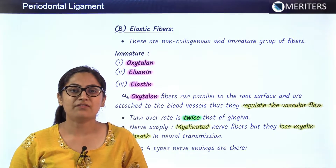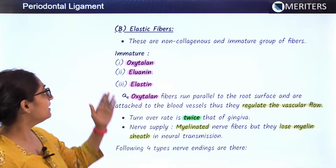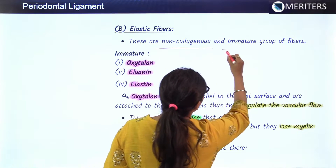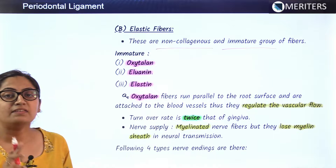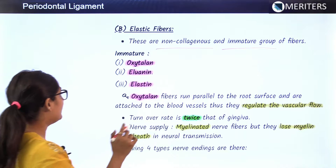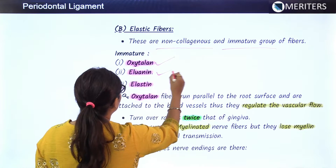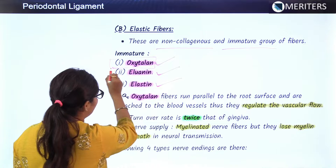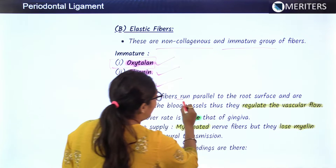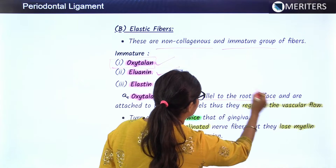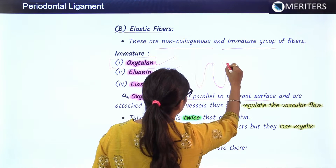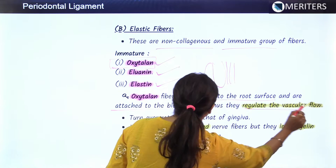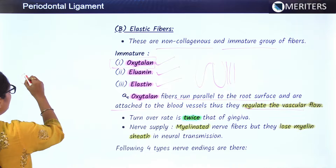When we are done with principal fibers, the other group is the elastic fibers, also known as the non-collagenous or immature group of fibers. There are three types: oxytilan, elionin, and elastin. The most important is the oxytalan fibers, which run parallel to the root surface, are attached to blood vessels, and regulate vascular flow.